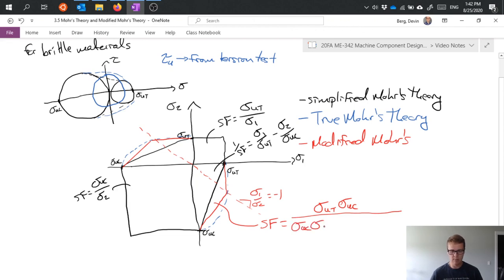sigma_uc divided by sigma_uc sigma_1 minus sigma_ut times sigma_1 plus sigma_2